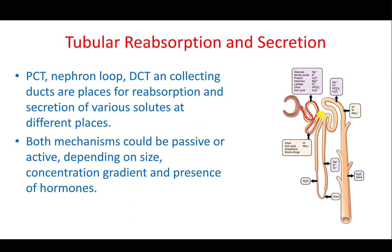After filtration, the filtrate travels through the proximal convoluted tubule, down and up through the nephron loop, and then to the distal convoluted tubule. Various processes of secretion and reabsorption occur along these segments. At the proximal convoluted tubule, there is significant reabsorption of water, bicarbonate, chloride, magnesium, calcium, potassium, sodium, and anything that should not be lost — such as glucose, amino acids, proteins, and vitamins.